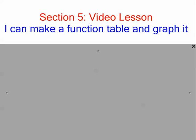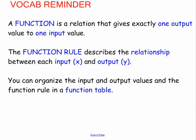This is section 5 video. Our lesson is over function tables and graphing them. So make sure you have your notes. We've got some vocabulary reminders here. Go ahead and fill in the blanks, then we'll go back and talk about them and give some examples. So the first one is a function. A function is a relation that gives exactly one output value to one input value — it has one output for one input.